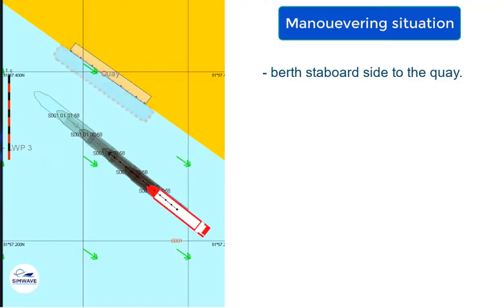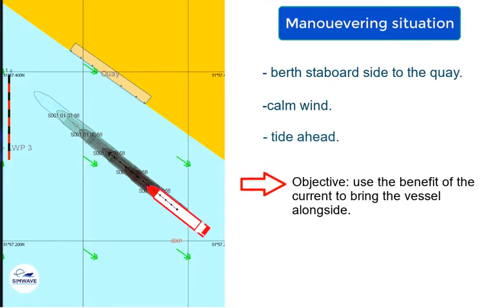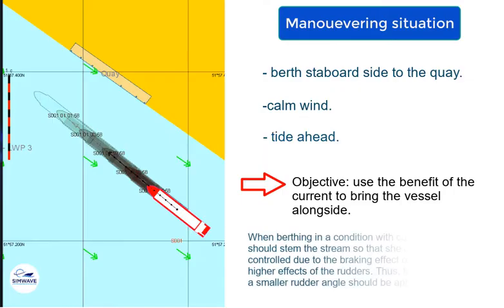This simulation run demonstrates how to berth the ship starboard side to a quay, in a condition of calm wind with tide ahead. The objective of this scenario is to use the benefit of the current to bring the vessel alongside.